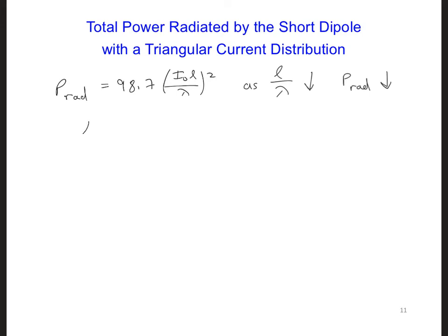For now we've said that l over lambda, at the beginning we said it's equal to 0.01, so if we plug this in, we get P radiated is 0.00987 I-naught squared.